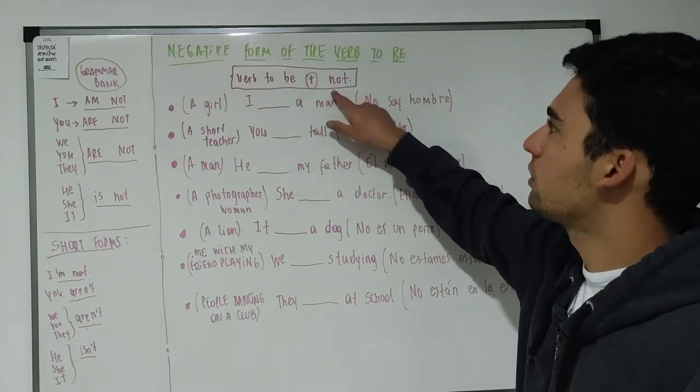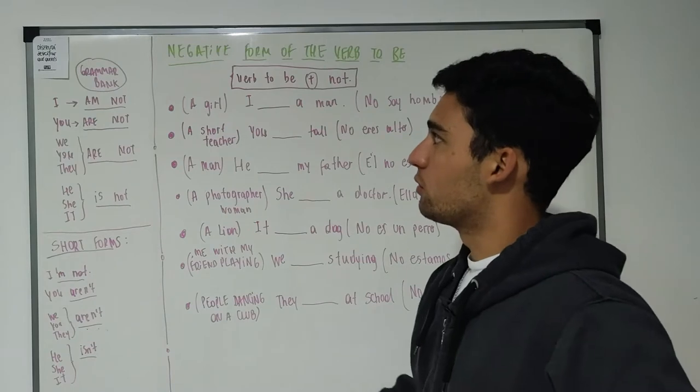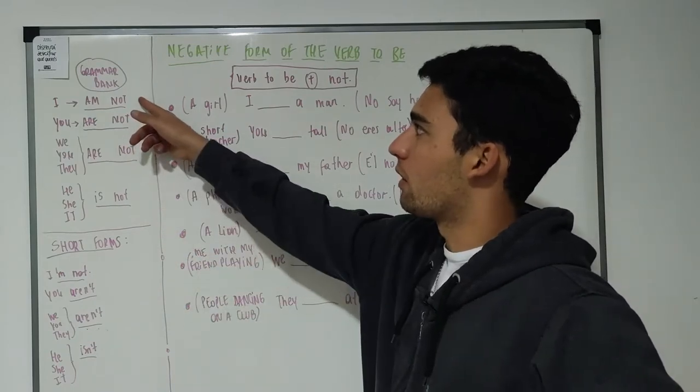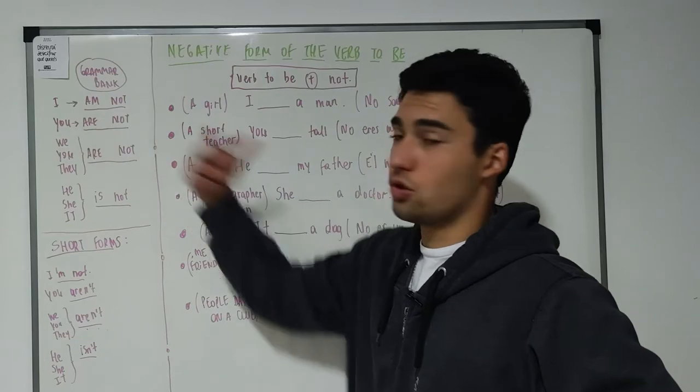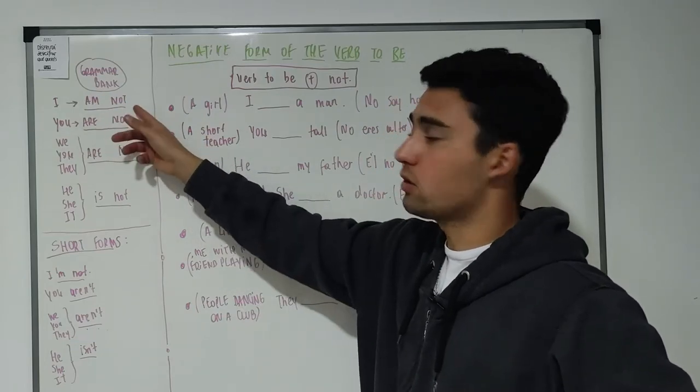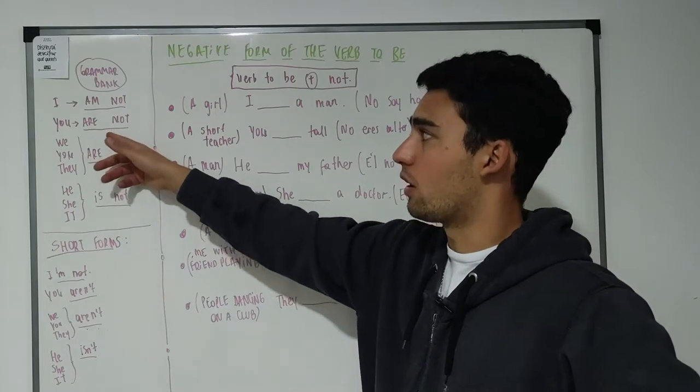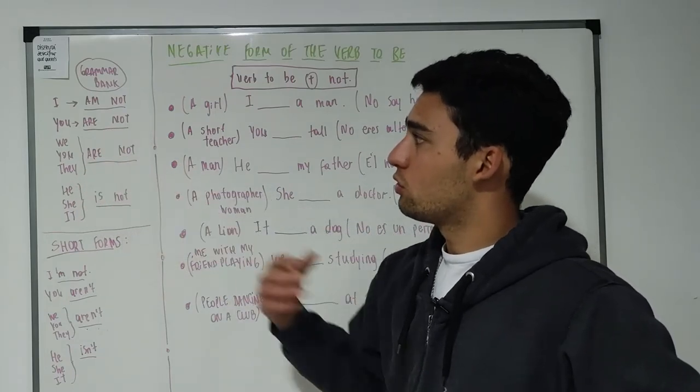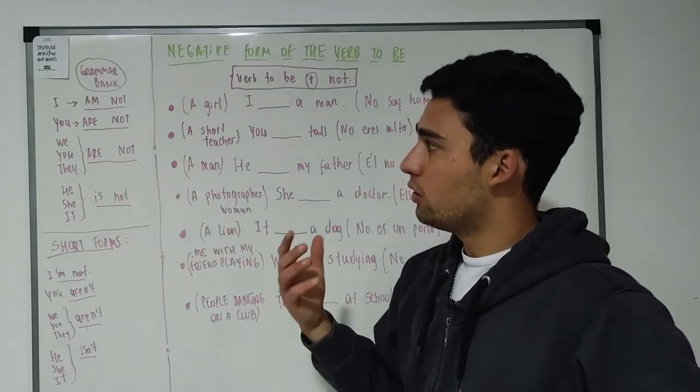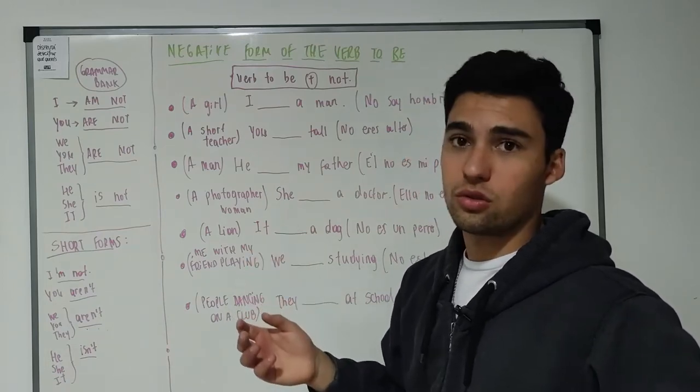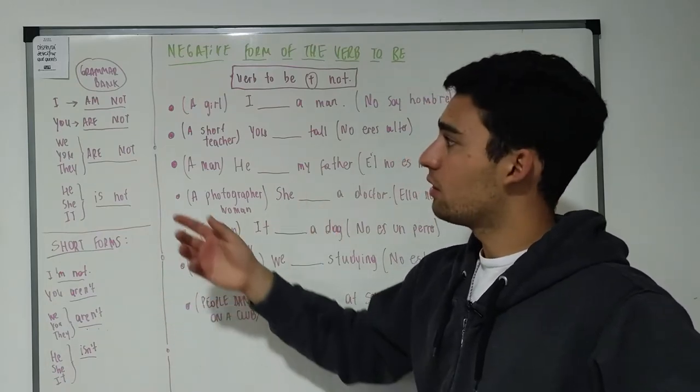To speak about rules, here we have our grammar bank. For I, yo, we use I'm not. For you, to, of us, we use are not. For we, you, and they, nosotros, ellos y ustedes, we use are not.